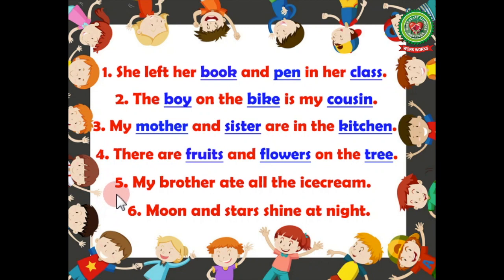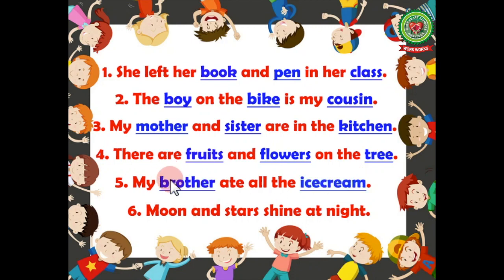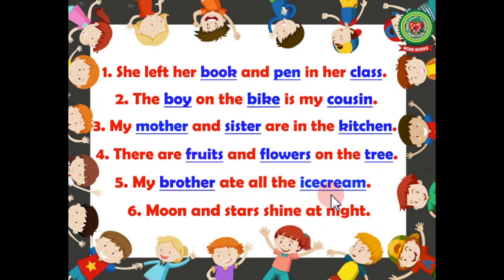Now let's come to number five: my brother ate all the ice cream. Just underline the nouns here. Let's check the answer. Brother — name of a person, so noun. Ice cream — name of a thing, so noun. Therefore we will underline these two nouns: brother and ice cream.